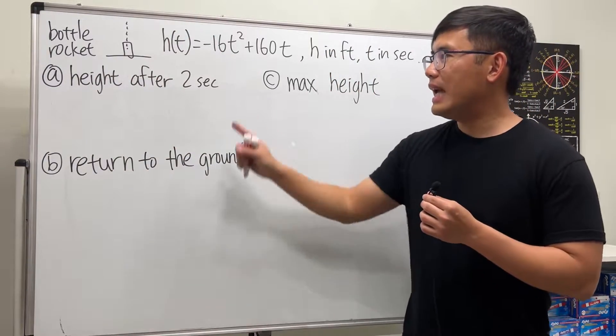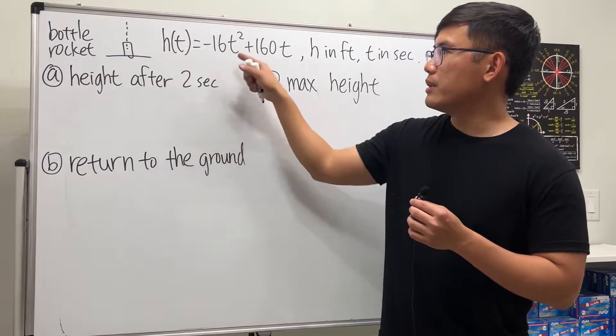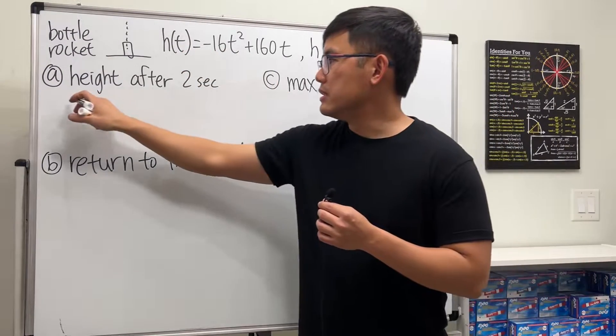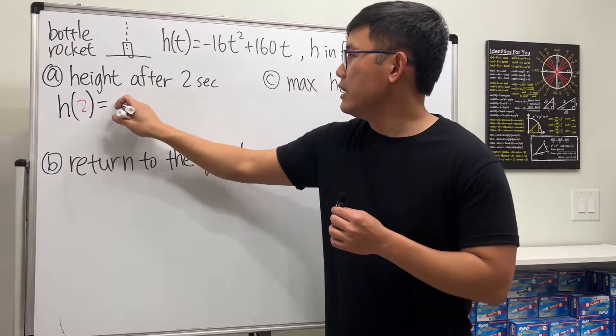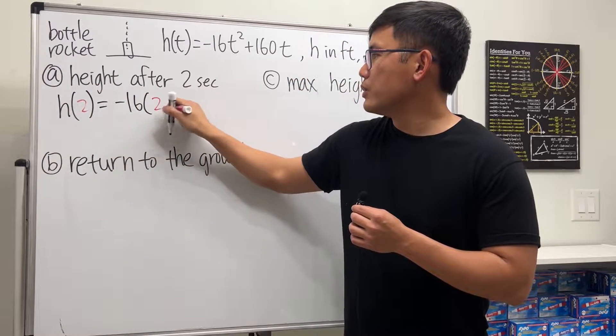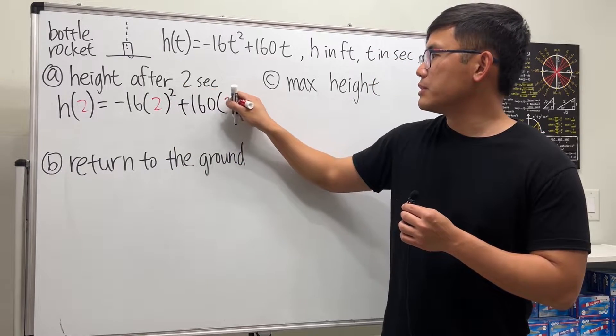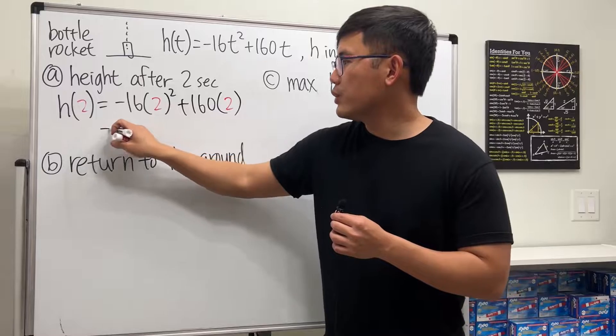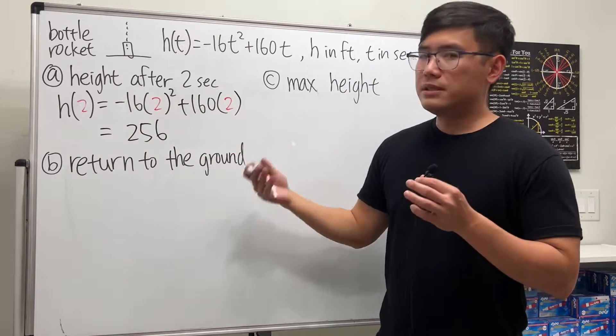We can just put 2 into t and work that out. This is asking us to get h(2), which equals -16 times 2 squared plus 160 times 2. If you work that out, you will get 256.